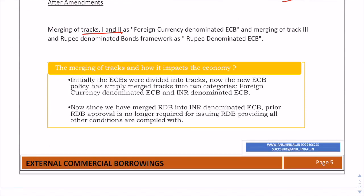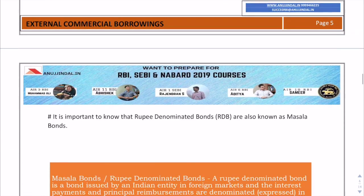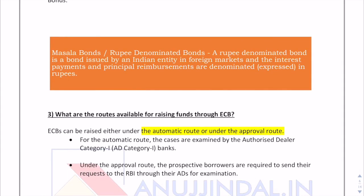The new ECB policy simply merges the tracks into two categories: FCD ECB and INR denominated ECB. Masala bonds are bonds issued by an Indian company denominated in INR. Such bonds are known as masala bonds, and the principal repayments or interest payments will be expressed in rupee terms only.